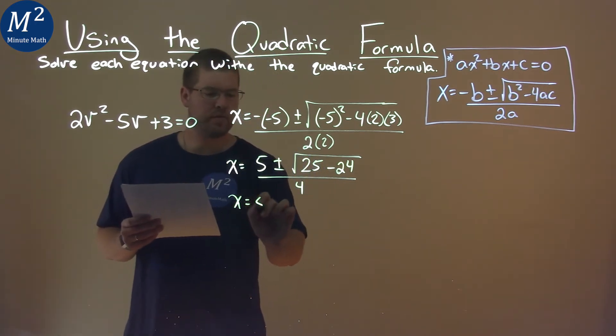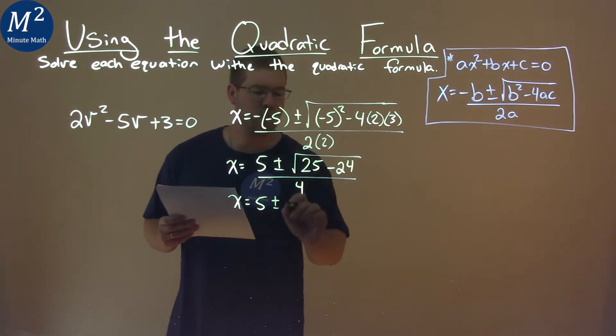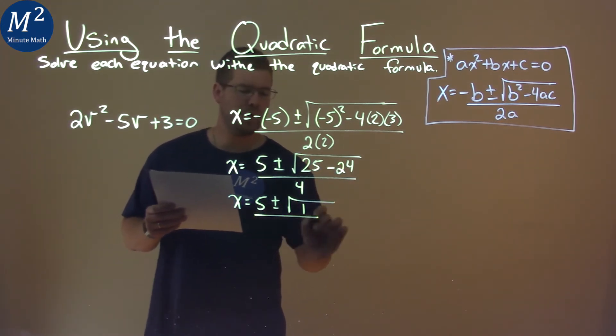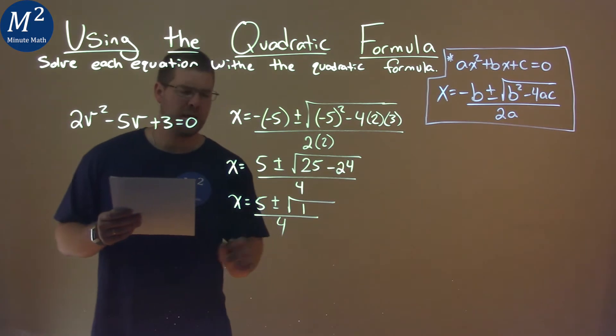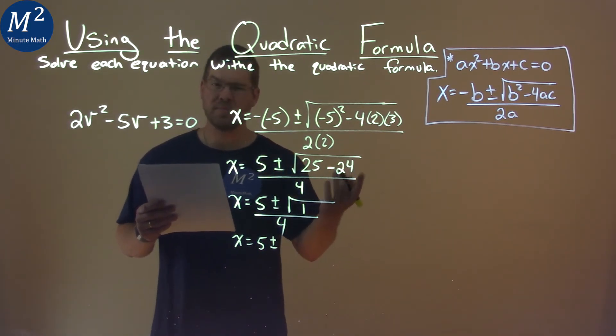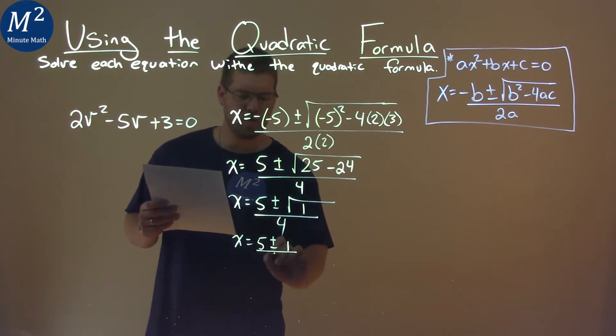Keep going down. x equals 5 plus or minus, and then 25 minus 24 is 1. So we have the square root of 1 over 4. Keep going. x equals 5 plus or minus, and the square root of 1 is 1 over 4.